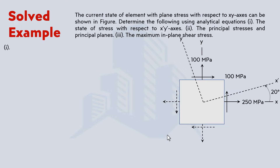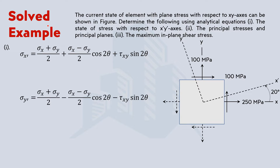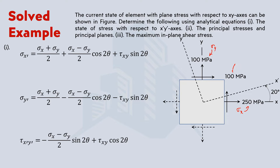From the previous videos, we have the equations to calculate plane stresses on a plane which is being rotated. This is the first equation where we can calculate the normal stress in the x' direction, normal stress in the y' direction, and shear stress on the x'-y' plane. What we have been given here is the normal stress in the x direction — sigma x — then sigma y, tau xy, and theta.